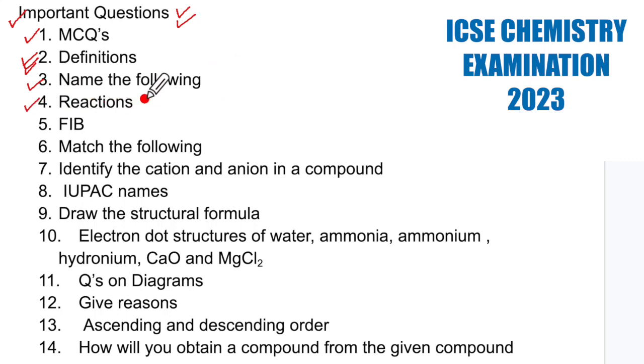Reactions. Now you know that periodic table and chemical bonding do not have reactions. But we have reactions in electrolysis. We have study of compounds. We have organic chemistry, metallurgy. There we will have reactions.